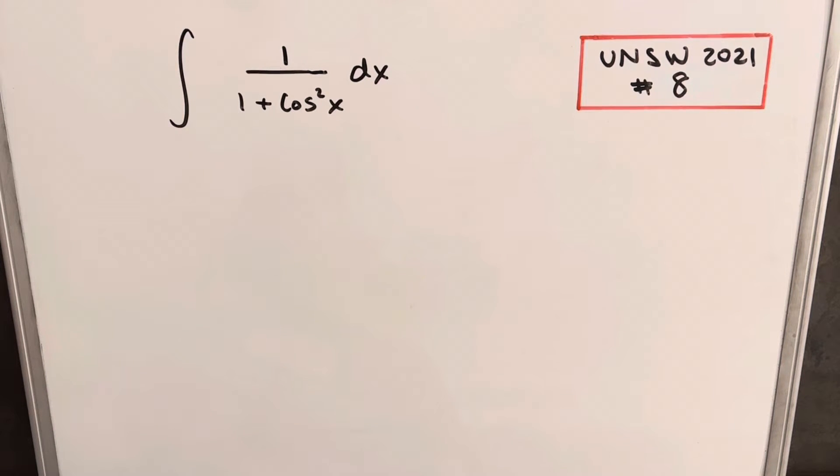Hey, we have another interesting integral today from the UNSW Integration B 2021. This was problem number eight. We have the integral of one over one plus cosine squared x dx.